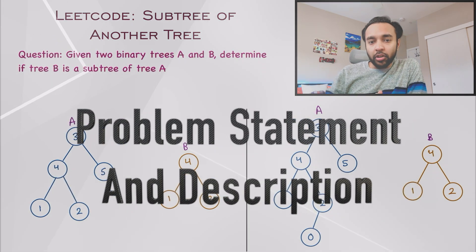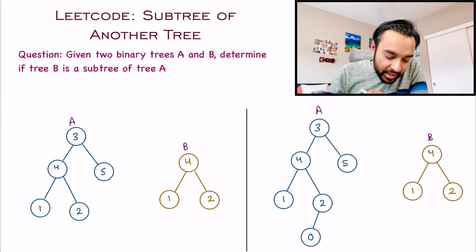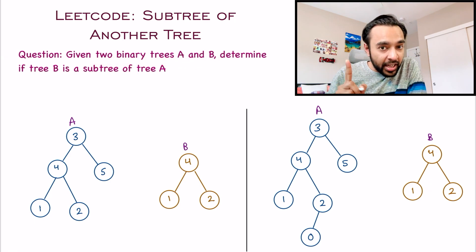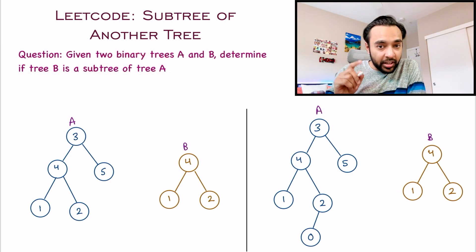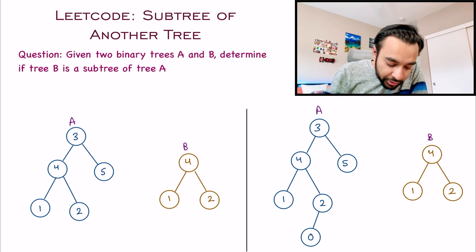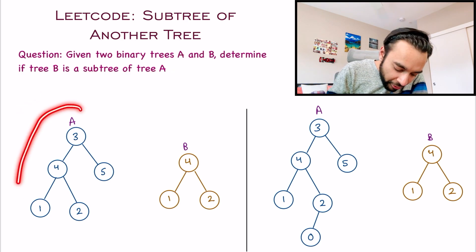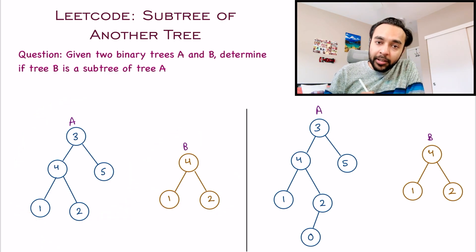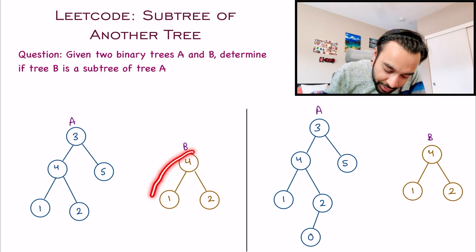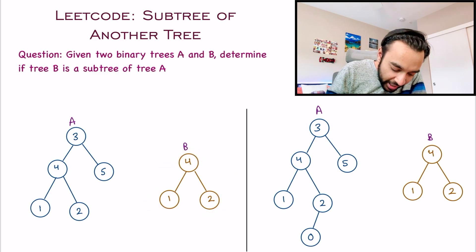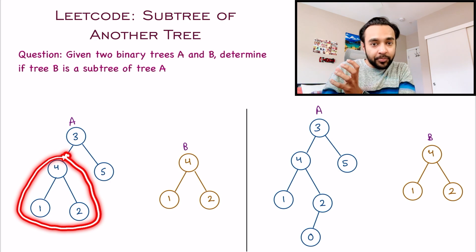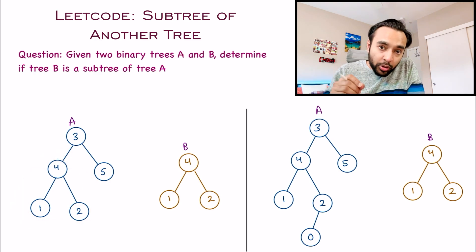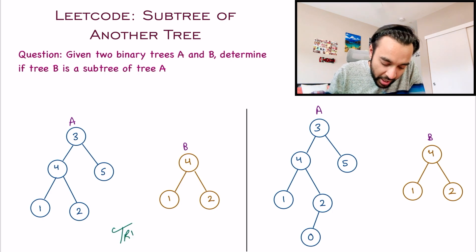First, let's make sure that we are understanding the problem statement correctly. In this problem, you are given two binary trees A and B, and you have to determine if tree B is a subtree of tree A. As you can see in our first test case, this is tree A and this is tree B. You can see that tree 4-1-2, you can find this entire tree right over here. So tree B is a subtree of tree A. If this condition is true, you just need to return true, else you need to return false. So in this case, true will be your answer.